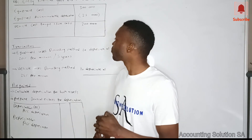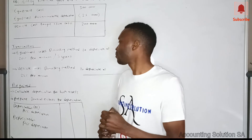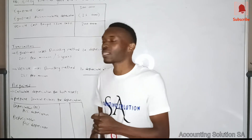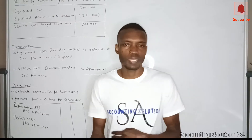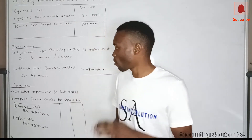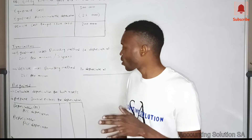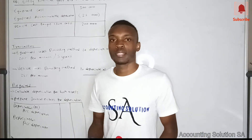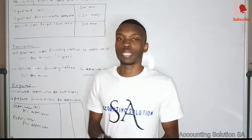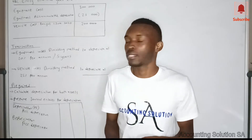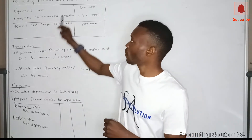Equipment was depreciated using the diminishing balance method at 20% per annum, which is the same as five years. The vehicle uses the diminishing balance method at 25% per year, which is the same as four years. The tasks are: number one, calculate depreciation for both assets; number two, prepare the general journal entries.